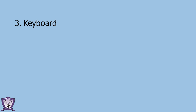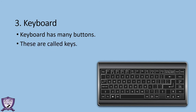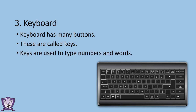Next is the keyboard. This is a picture of a keyboard. The keyboard has many buttons, and those buttons are called keys. Keys are used to type numbers and words — we press these keys to type.